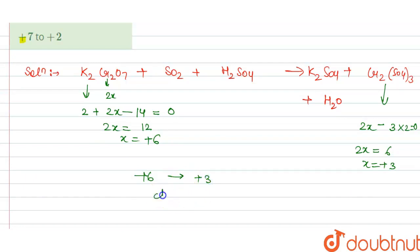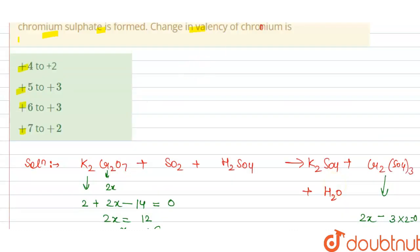This is the change in valency of chromium. So this is the answer for this question, so from this we can say that our option c is correct.